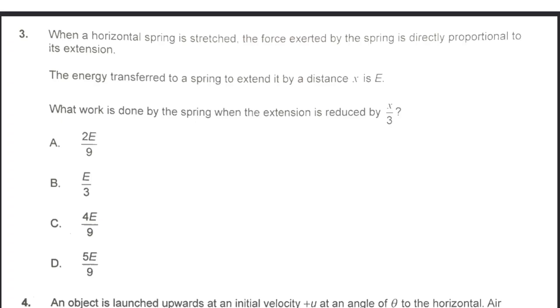When a horizontal spring is stretched, the force exerted by the spring is directly proportional to its extension. The energy transferred to a spring to extend it by a distance x is E. What work is done by the spring when the extension is reduced by x over 3?